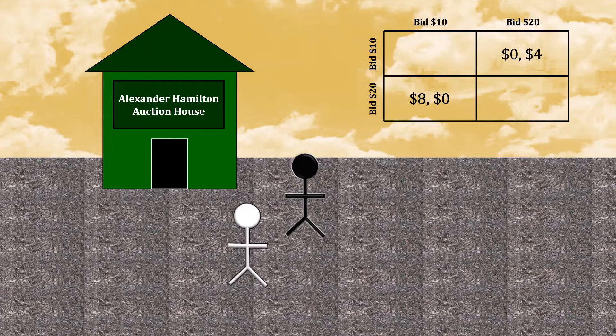The other two outcomes are a little more complicated, because they both result in a tie. Under those circumstances, the auction house awards the book to each of you with 50% probability.